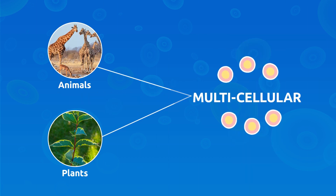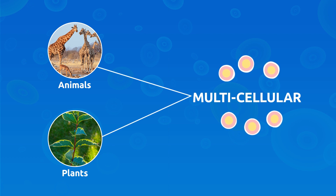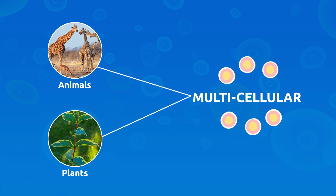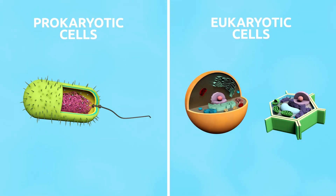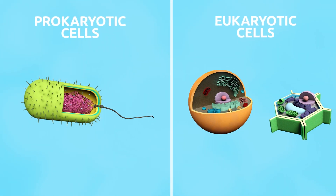Multicellular organisms are made up by a large number of cells. Trees, animals, or human beings are multicellular organisms. Based on their structure, cells are grouped into prokaryotic and eukaryotic cells.